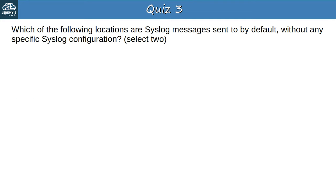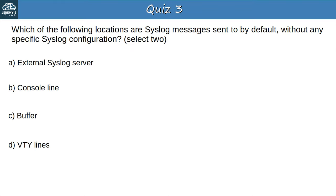Question 3: Which of the following locations are syslog messages sent to by default, without any specific syslog configuration? Select 2. The answers are B, the console line, and C, the buffer. By default you will see syslog messages in real time when connected to the CLI via the console port. You can also use 'show logging' to view messages stored in the logging buffer. The device will not send syslog messages to an external server until configured to do so, and syslog messages won't be displayed via VTY lines using telnet or SSH by default.